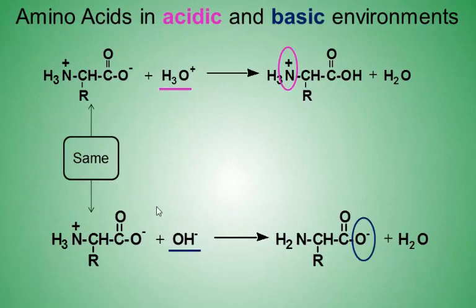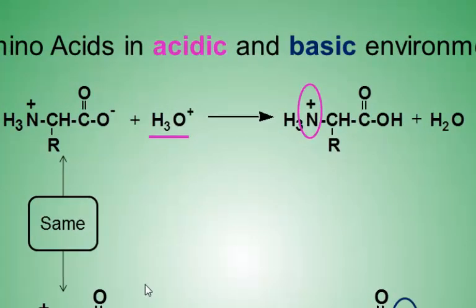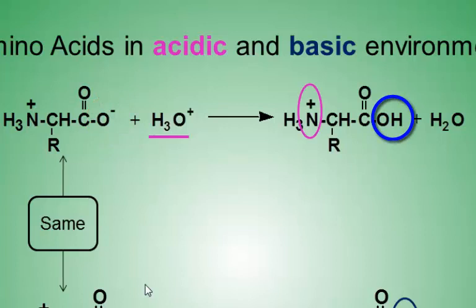Let's take a close look at when amino acids are placed in relatively acidic and relatively basic environments. We'll start with a general amino acid with an R group — no specific amino acid. If we place the amino acid in an acidic environment, the oxide of the carboxylate group becomes protonated. The hydrogen ion from the H₃O⁺ attaches to the O⁻, and the zwitterion becomes a cation.